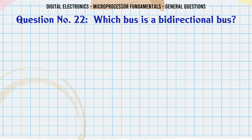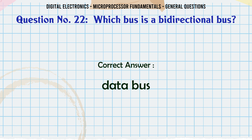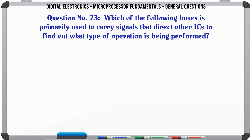Which bus is a bi-directional bus? A. Address bus, B. Data bus, C. Address bus and data bus, D. None of the above. The correct answer is Data bus.